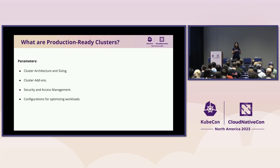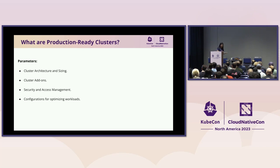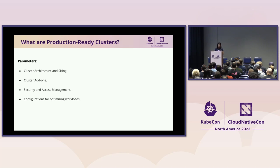Once clusters are up and running, we start thinking about what add-ons we want to deploy — monitoring tools for visibility, backup, and storage, and security. We create cluster add-ons for these production clusters. Once up and running, we figure out what access management looks like, who can access the cluster, what the security looks like, what the configuration of applications looks like, and what best practices to consider. So it's not like normal clusters; we are making sure these are ready for production and automating all the parameters that make the cluster go live.